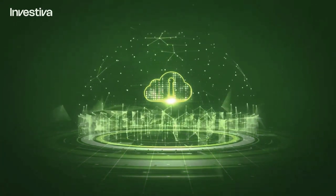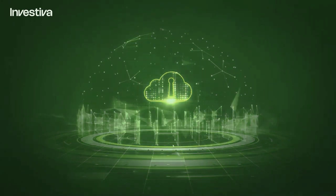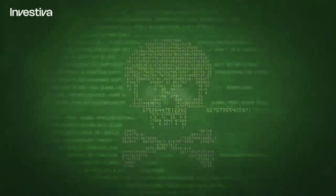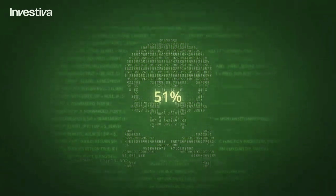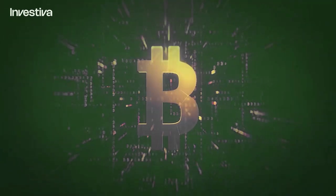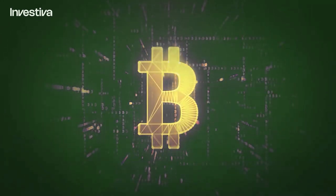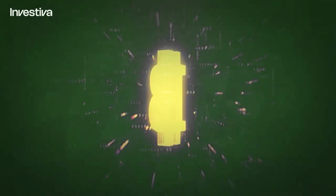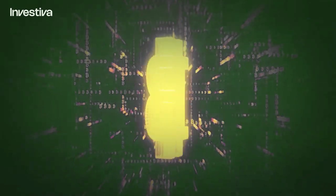When consensus is reached, the ledger is immutable. An attacker must gain 51 percent control of the network to manipulate the ledger, which, when considered the massive hash rate of the Bitcoin network, is impossible to achieve without spending more than the value of any potential hack.